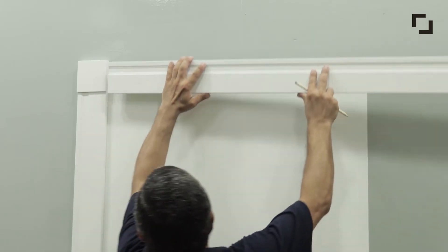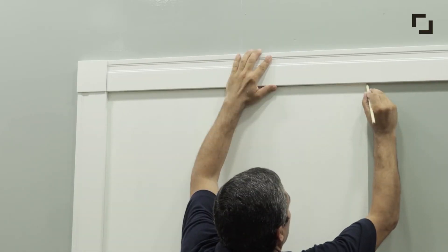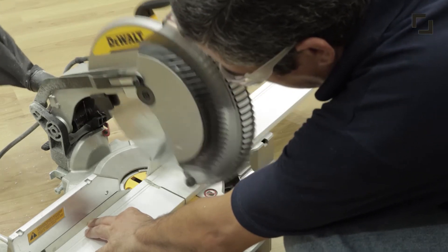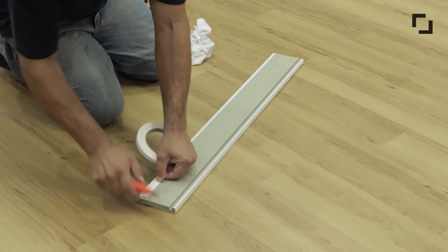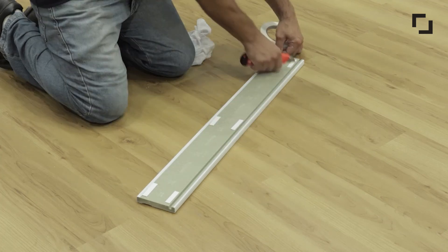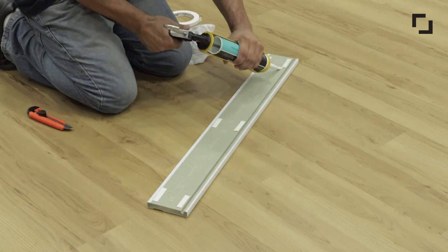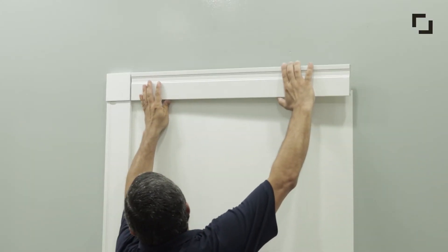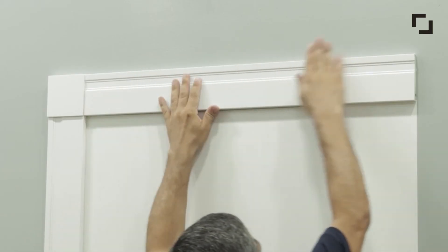Now fit the casing that will go on top and mark it with the cut mark. Position the mark on the saw and make the cut. Repeat the process of bonding the double-sided tape and super adhesive application. Glue the casing to the wall and press the product against the wall to fixate it well.